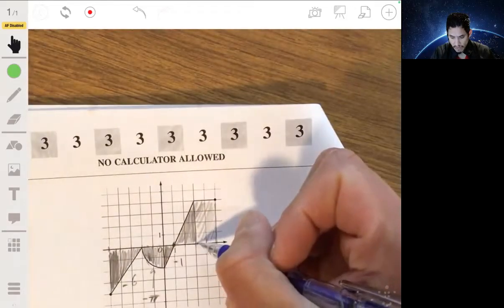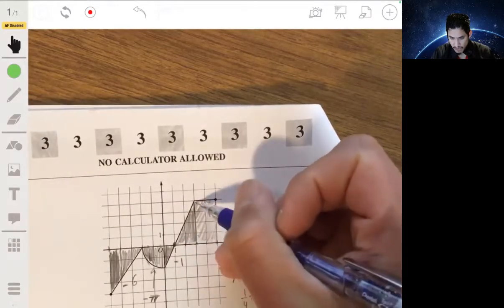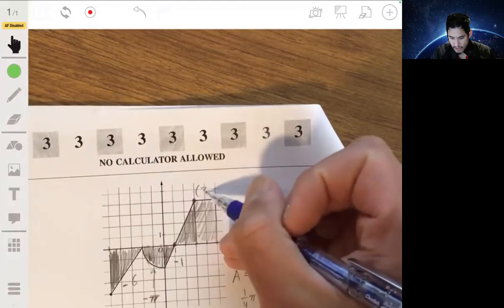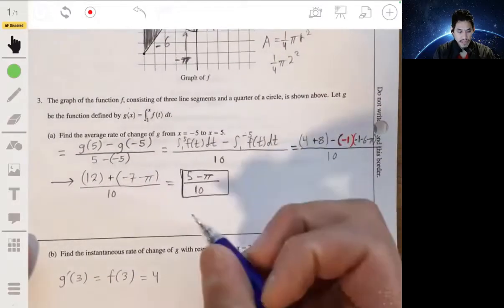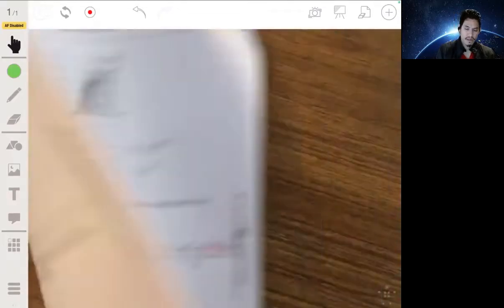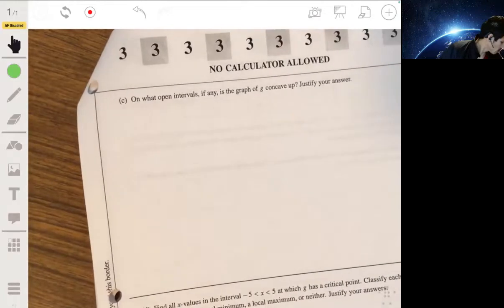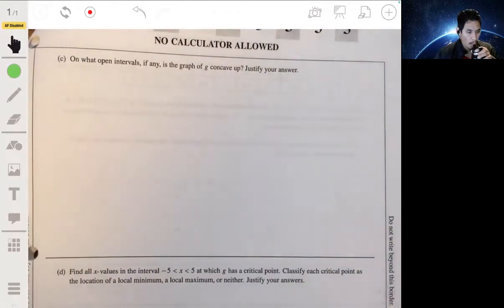So you look at the graph of f, 1, 2, 3, and f of 3 is this point right here, 3, 4. So f of 3 is 4, and that's your answer for that. That's all there is to that part. Right. How to stay hydrated.